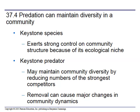Predation can maintain diversity in a community. There's something called a keystone species, which can exert strong control on community structure because of its specific ecological niche. A lot of times we think of the top predator as a keystone species, but it doesn't have to be the top predator — it can be something in the middle of your food web. If they have control over a certain area, they become a keystone species.